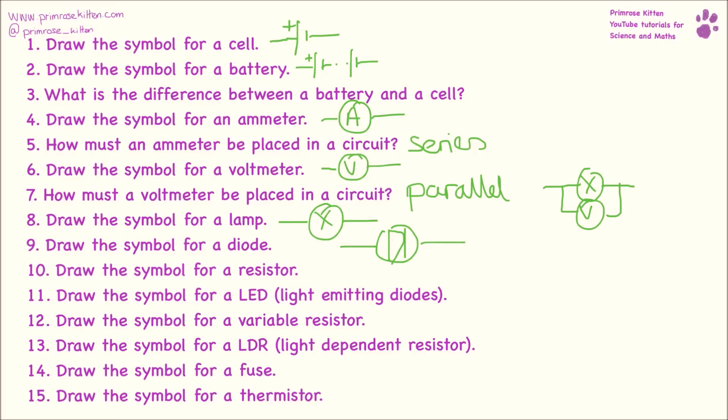Symbol for a diode. Lots of things going on here. Triangles, lines. Symbol for a resistor. Symbol for a light emitting diode. So we start off with our diode and then we have some arrows coming out. Symbol for a variable resistor. Start off with a resistor and then we vary it.